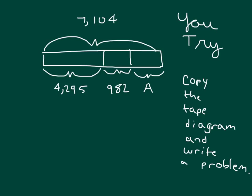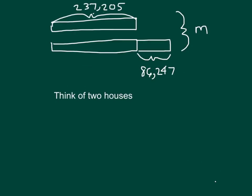You don't have to solve it. Here's another tape diagram to think of. Well, we got something here, 237,205. And we're asked to think of two houses. So this one's given here, it looks like.